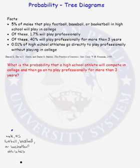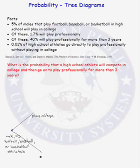Let's start the tree diagram. The tree diagram starts with all male high school football, baseball, or basketball athletes. What can happen to those athletes? They can play in college, or they can not play in college — we'll call that 'play in college complement.'